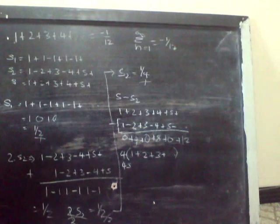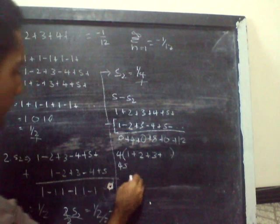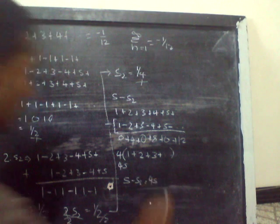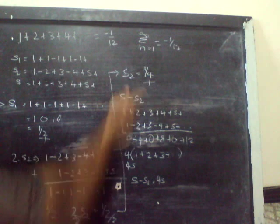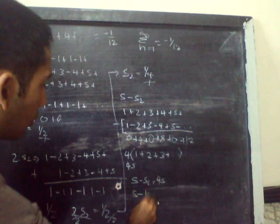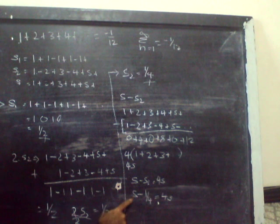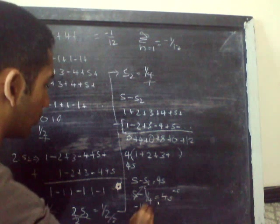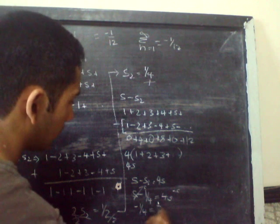Now what I will do is go back to my idea here: S minus S2 is equal to 4S. Since we found out that S2 is 1/4, I will substitute that quarter into this equation. So we have S minus 1/4 is equal to 4S. I will try and get rid of this S here. So S minus 4S.